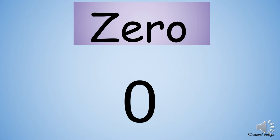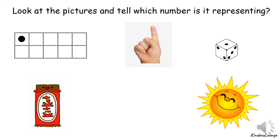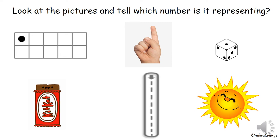What's the number that comes after zero? Look at these pictures and tell which number they are representing. I can see one counter in a ten frame, one finger, one dot on a die, one chocolate, and one sun. All these pictures are representing number one.